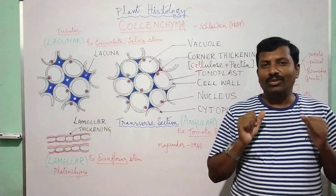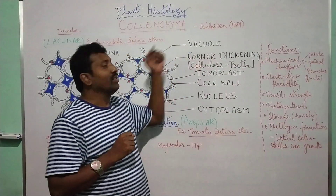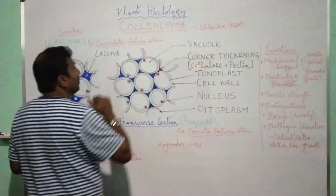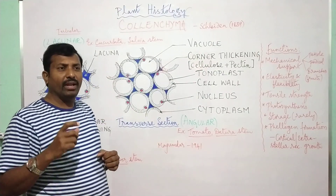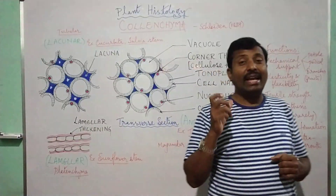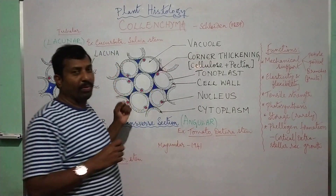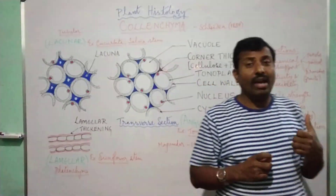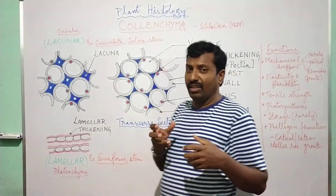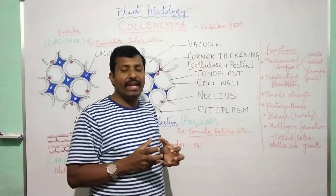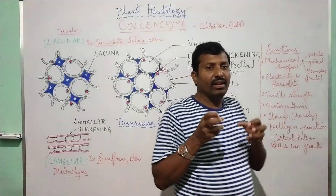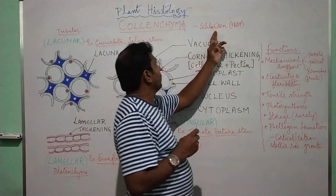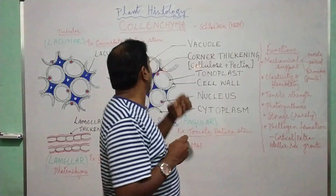Hi Learners! Today we are going to study about the second simple permanent tissue in plants called Collenchyma. Collenchyma tissue is a simple permanent living mechanical tissue, with living protoplasm. The term Collenchyma is derived from the Greek word 'kolla' meaning glue, referring to the glue-like elastic tissue. In plants it is presented as an elastic tissue and also gives mechanical support. Schleiden in 1839 used the word Collenchyma.